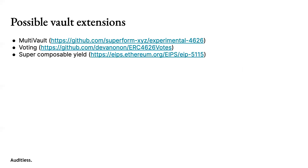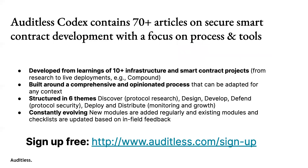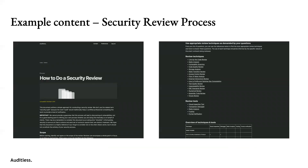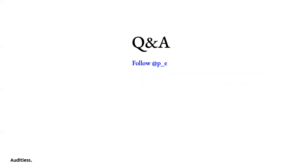There are also vault extensions — people are trying to create vaults that support multiple tokens, adding voting and other features. We're going to have a rich ecosystem of extensions. That's my early learnings on ERC-4626. Please get in touch if you have ideas. There's also a free security resource with articles on general security processes and journal reviews. Hopefully you find it useful.